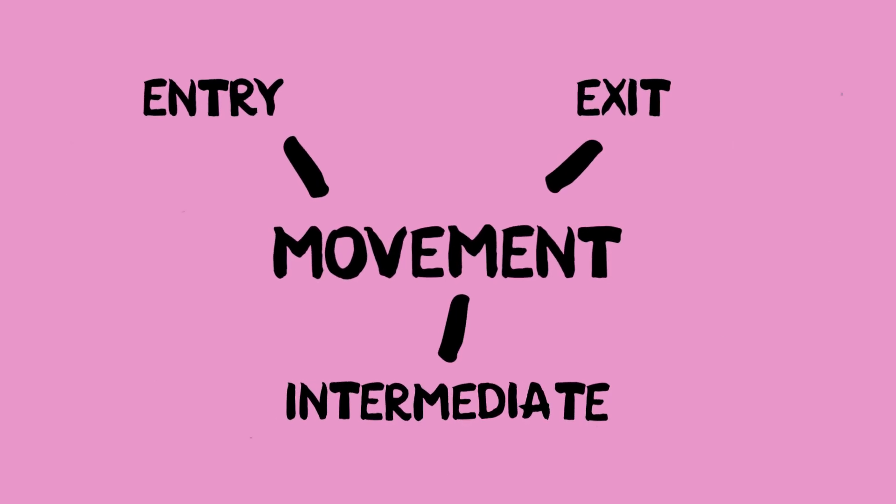Entry and exit are self-explanatory. Entry is when something enters the screen — let's say my hands are a PNG, it starts from off-screen and by the end of the animation it's on-screen. Exit is when something starts on-screen and then leaves. Intermediate is something I don't hear many people talk about — it's when something starts on the screen in one position and then ends in another, so it's moving from here to here. There's a different curve for that as well.